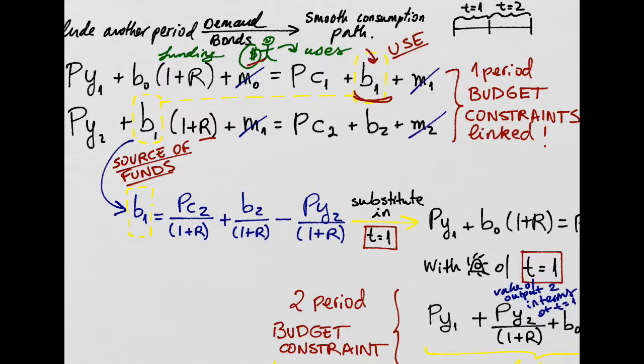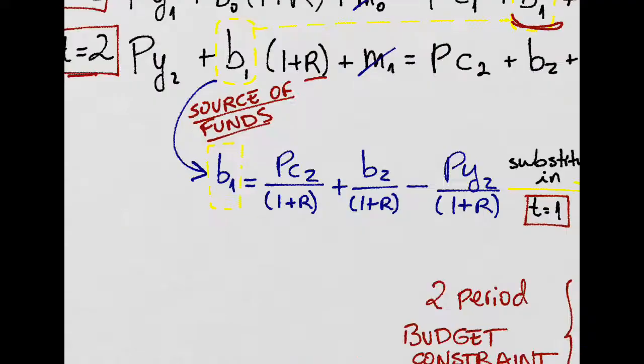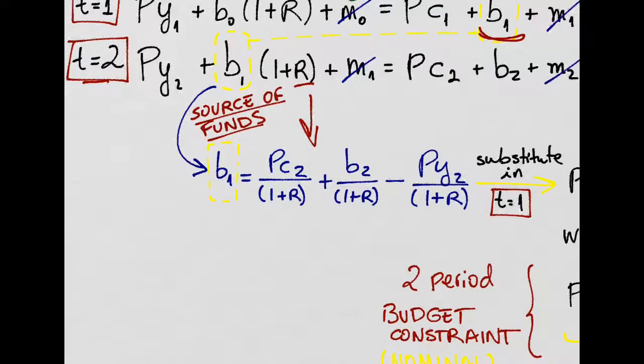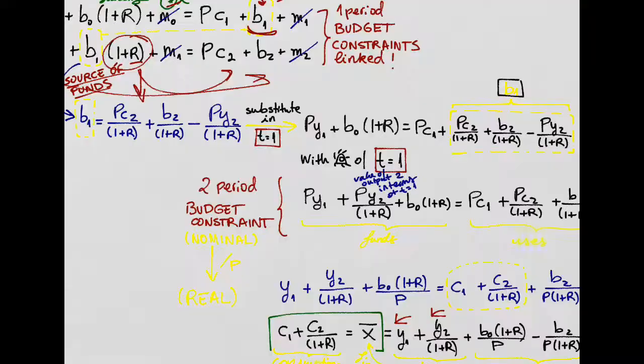Savings today are the sources of funds of tomorrow. We solve for B1 in the second budget constraint. We take that over there, and we divide over this, and we substitute in the period one budget constraint right here. This will be B1, the new B1.